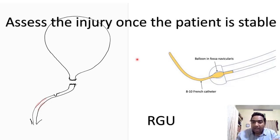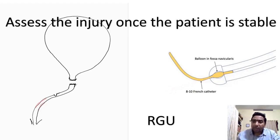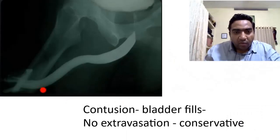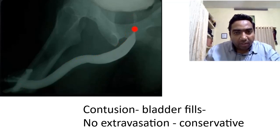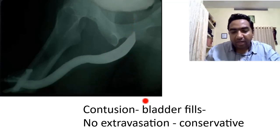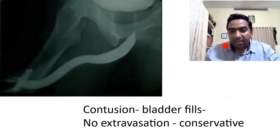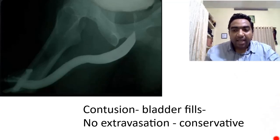Once the patient is stable, we use a retrograde urethrogram to assess the urethra. In a contusion, on retrograde urethrogram you can see the complete urethra — the prostatic urethra is slit-like and the bladder fills normally. In a contusion, you may not see any external injuries, and management is generally conservative.